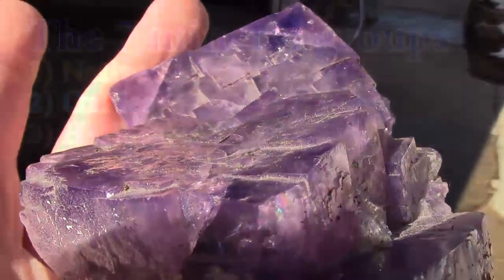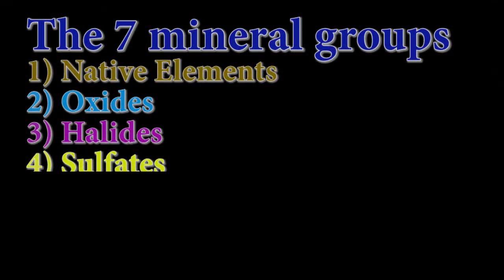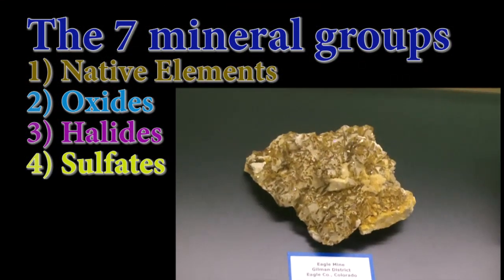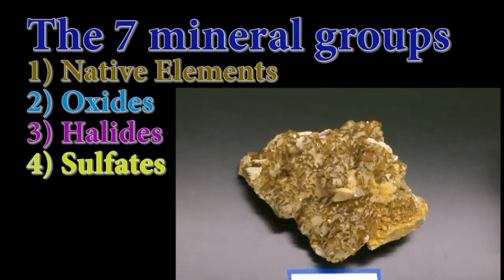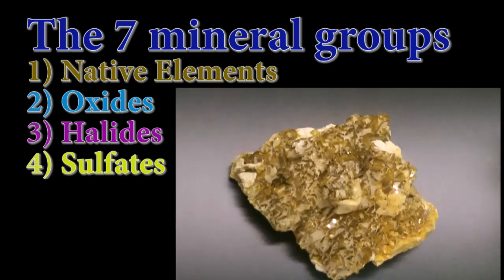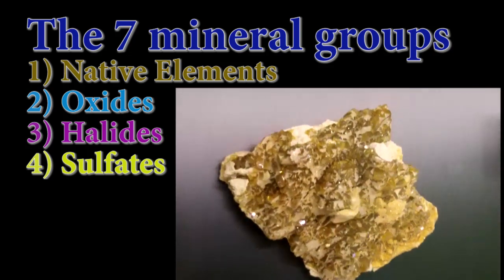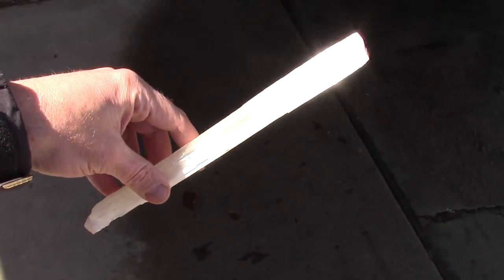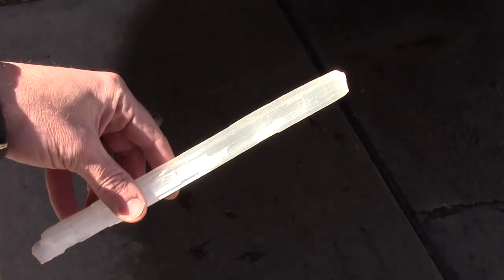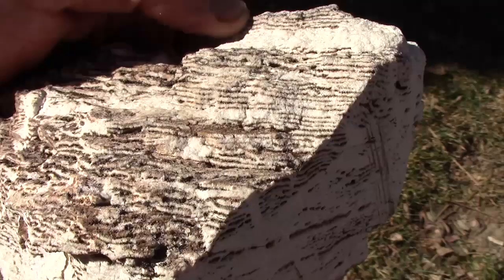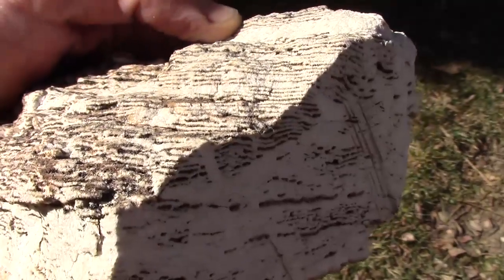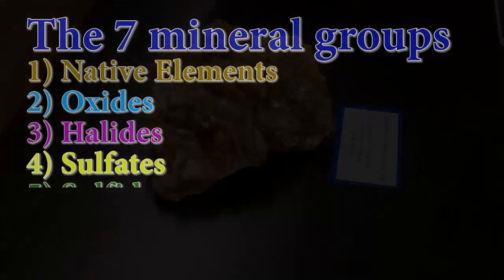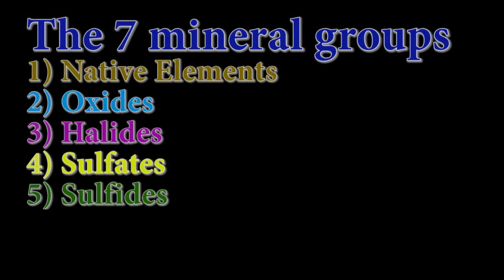The fourth group is the sulfate minerals, which are those with the SO₄²⁻ complex anion, and these are also commonly associated with marine evaporites. The most common are gypsum, anhydrite, and barite.